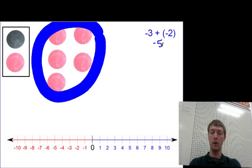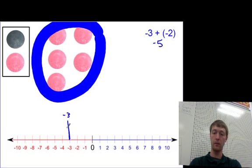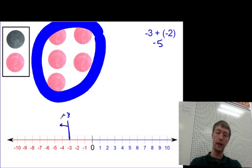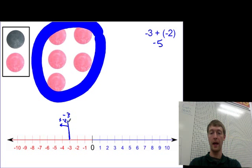On the number line, we're starting at negative three. More negative means we're going to move to the left, where more negatives are, and we end up at negative five.